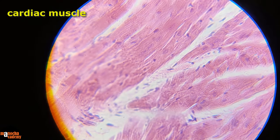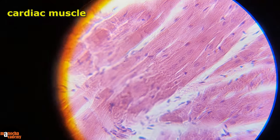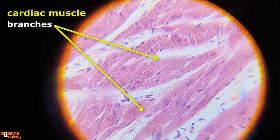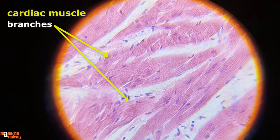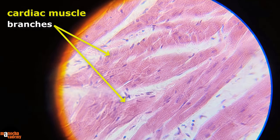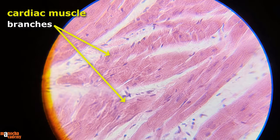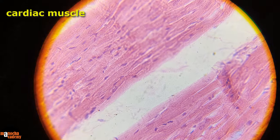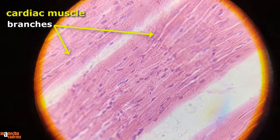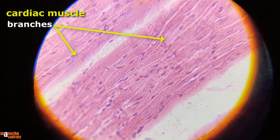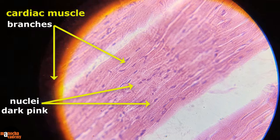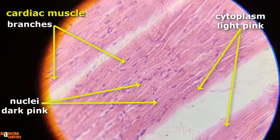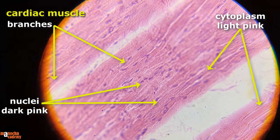This is how it looks under the microscope at 100x magnification. You can clearly see the cells and their branching, but to see the nucleus you need to magnify it a little more. Now at higher magnification you can clearly see not only the cells and their branchings, but also the nuclei which are stained in dark pink or reddish color in contrast to the cytoplasm which is stained light pink.